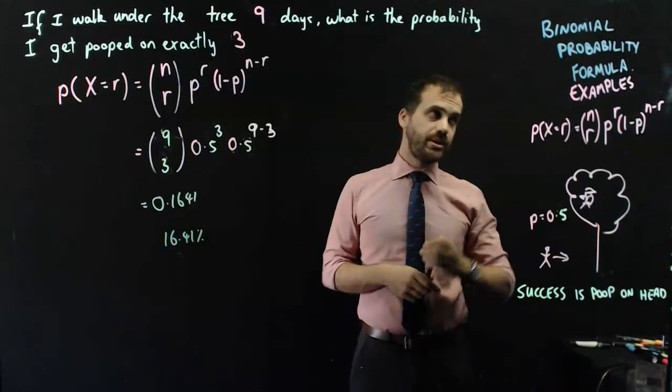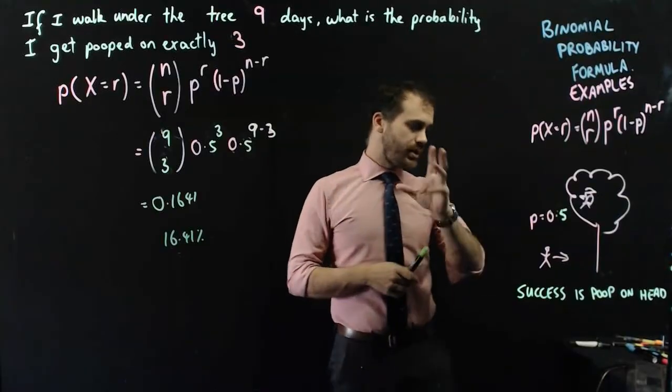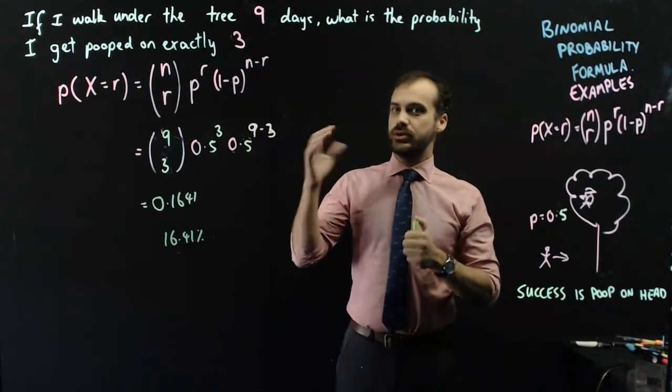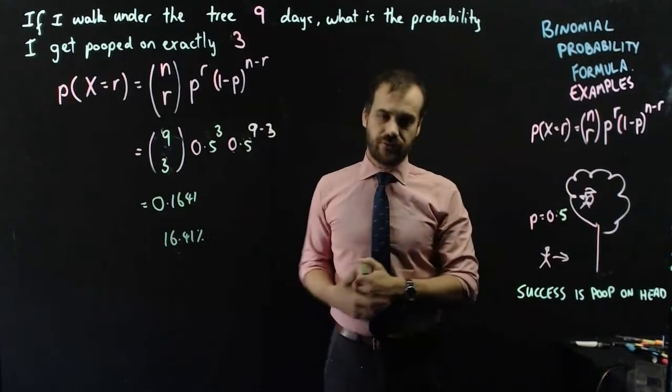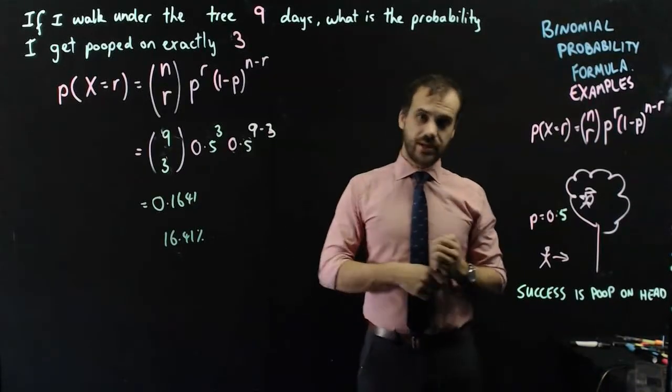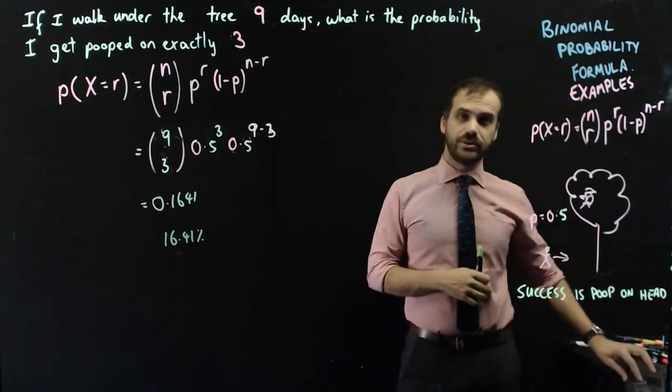That's binomial probability example. I want to go through another one where we do something called a cumulative distribution, but that's pretty close to being everything you need to know about binomial distribution.